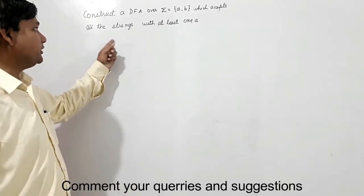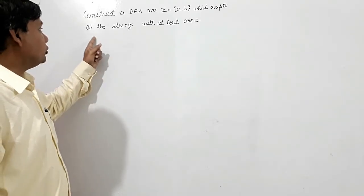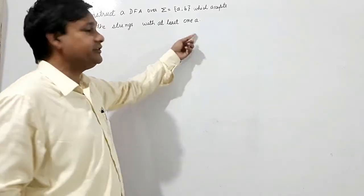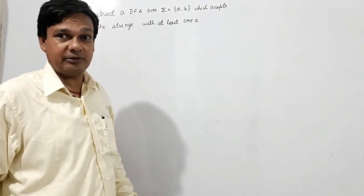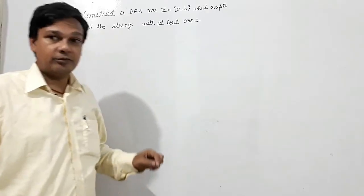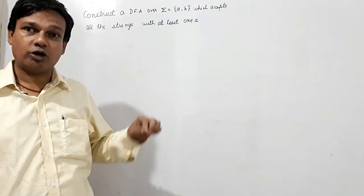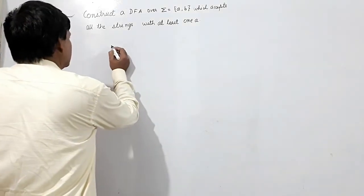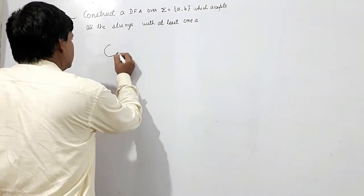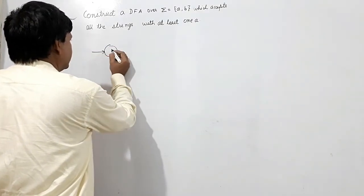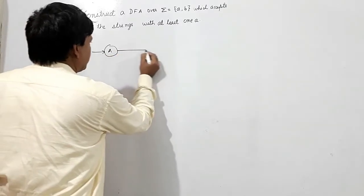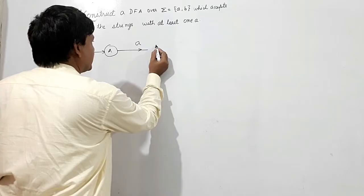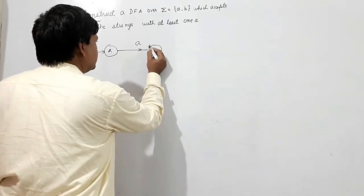The next question asks for a DFA that accepts all strings with at least one A. At least one A means there will be one A or more than one A. So this is the initial state. If I get A, it should be accepted.